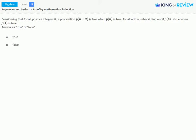Considering that for all positive integers n, a proposition p of n plus 2 is true when p of n is true, for all odd number k, find out if p of k is true when p of 1 is true.